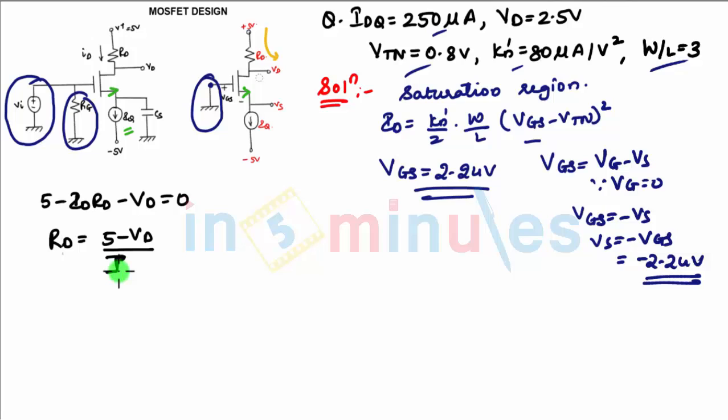You can say ID will be (5 minus VD) upon... or we need to find the value of the resistance RD. RD is nothing but (5 minus VD) upon IDQ. So VD is given as 2.5 volts in the equation. Substituting, you will get it as 10 kilohms. This completes the design, but we need to check whether the transistor is in saturation.